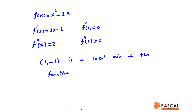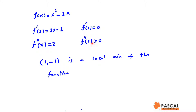So what we do is: we find the derivative, we set the derivative to 0, and we find the critical numbers. Then we plug those numbers into the second derivative to see if the second derivative is positive or negative.